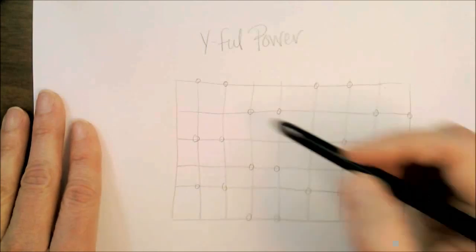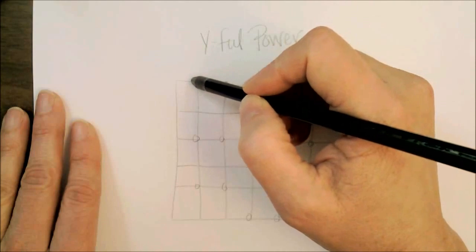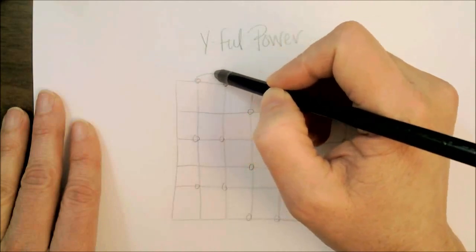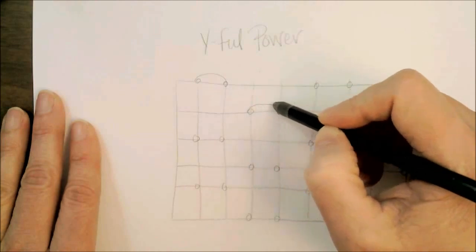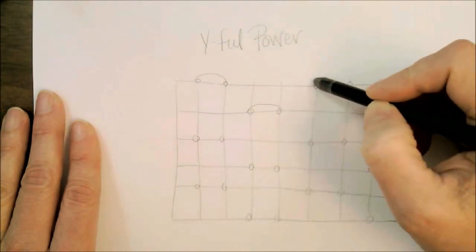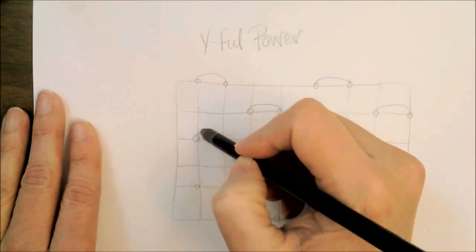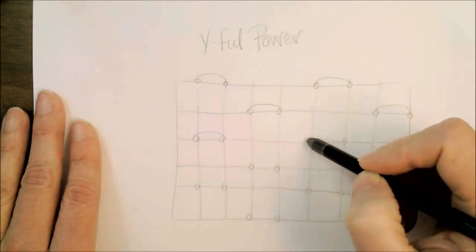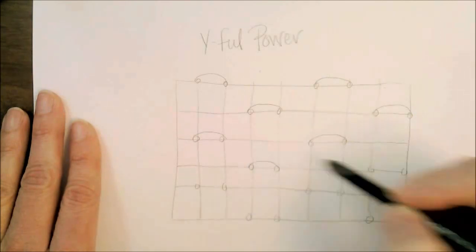Once we have the dots drawn, we're going to draw an arc and connect the outer edges of the dots with the arc that we draw above them. It kind of looks like an eyebrow above a couple of eyes. We're basically just connecting the outer edges of the dots.